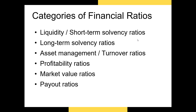I'm going to talk about six different categories of ratios. Liquidity ratios tell us how liquid the firm's assets are. Solvency or long-term solvency ratios tell us how likely it is that a firm will be able to make its interest payments to creditors. Asset management or turnover ratios tell us how efficient the firm is. Profitability ratios tell us how profitable the firm is. Market value or valuation ratios tell us how valuable the company is relative to competitors. And payout ratios tell us how much of the firm's net income is being paid out to shareholders.